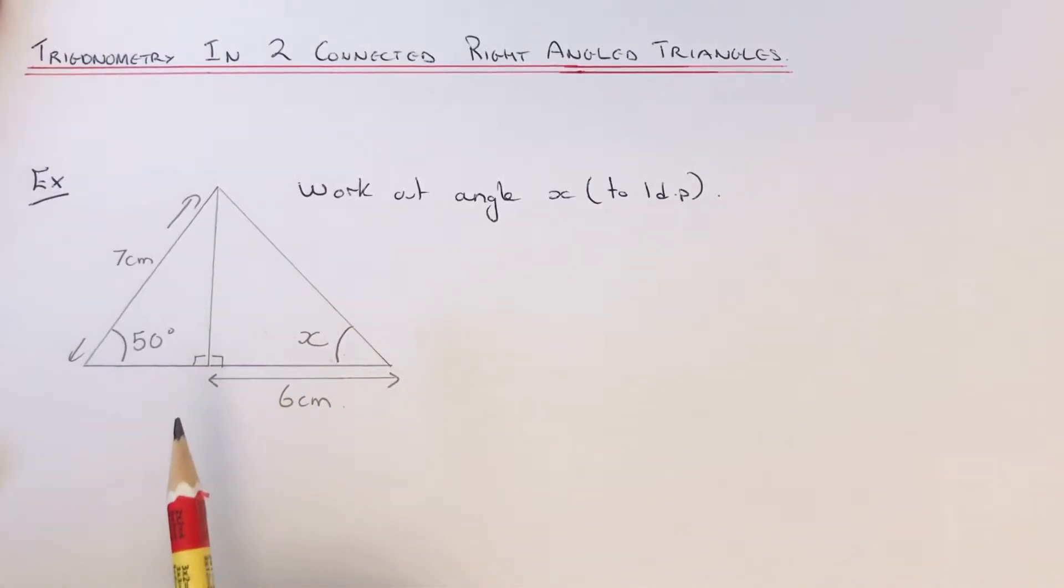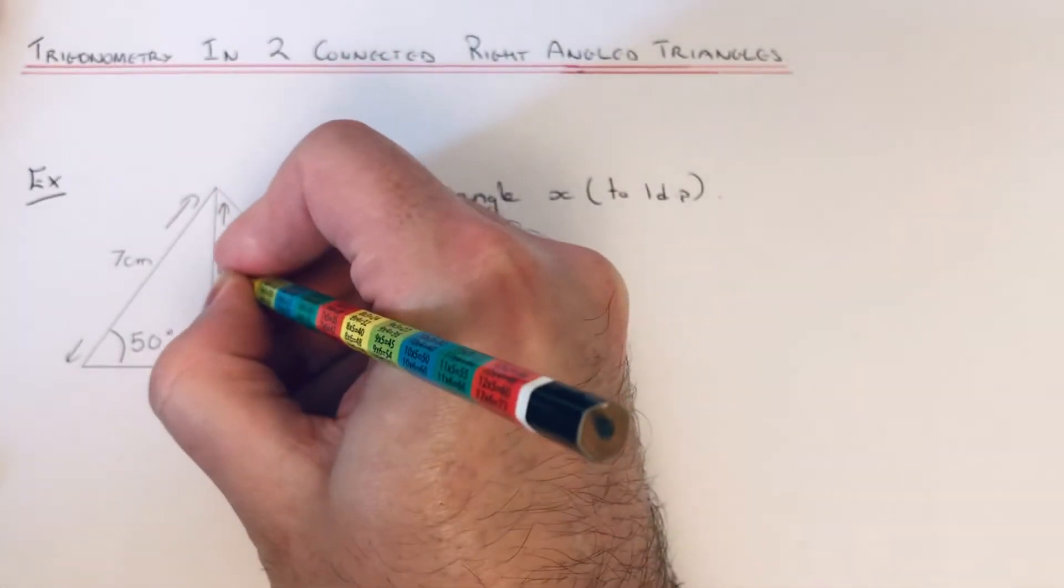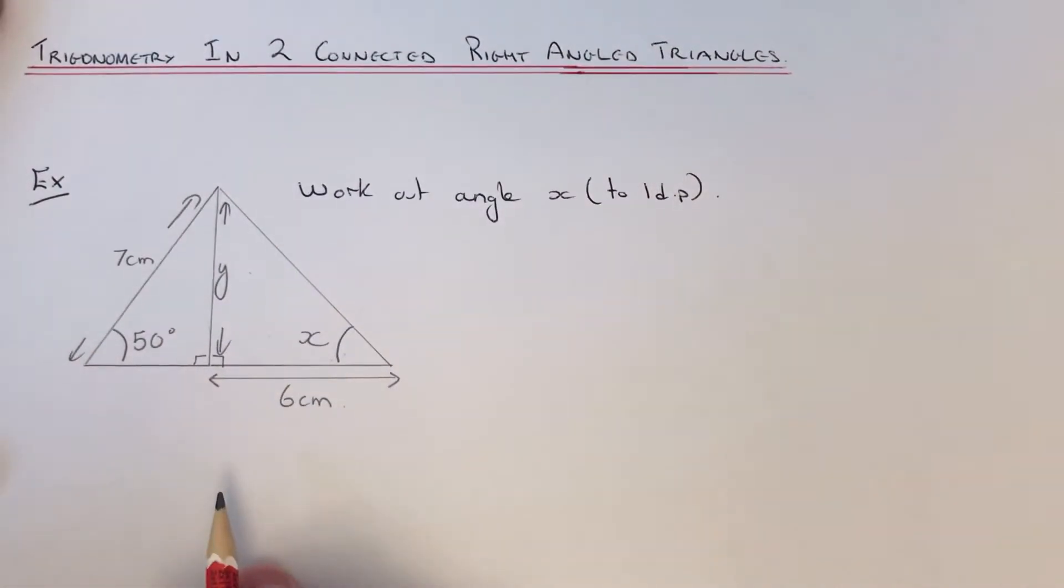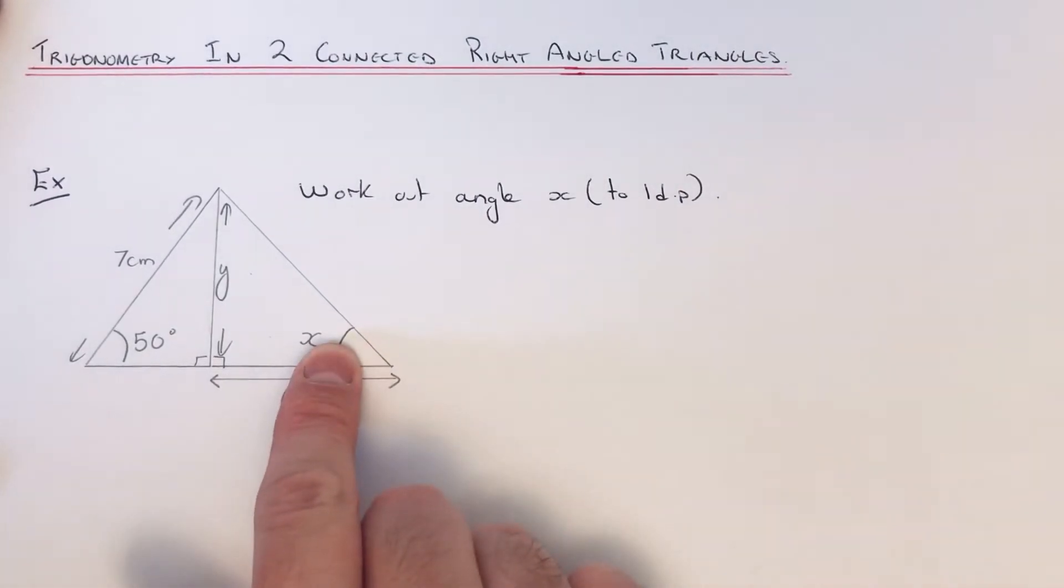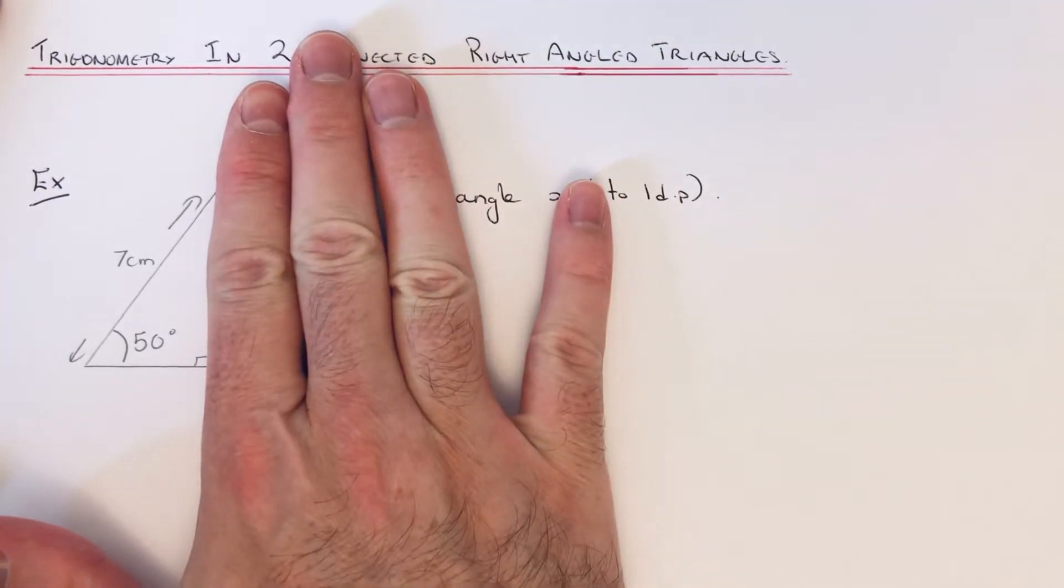Usually with this sort of problem, you'll need to work out the length connecting the two triangles. Let's call this length Y. Before we can work out angle X, we need to use the left triangle to find side length Y.